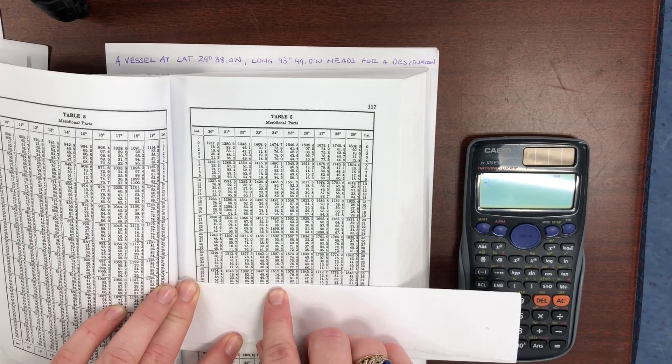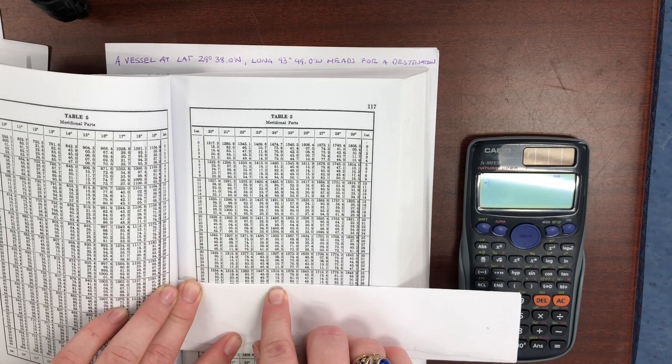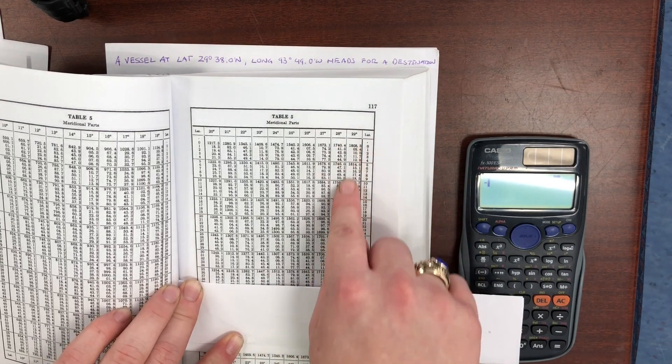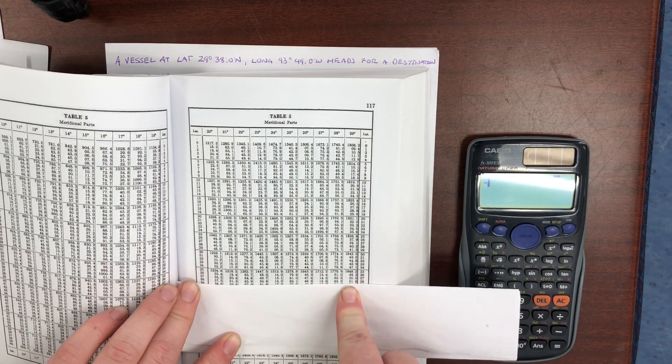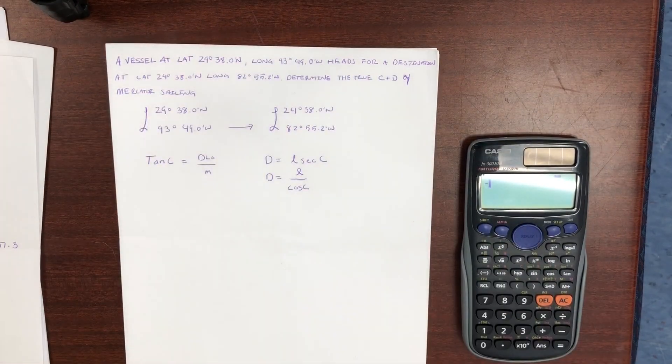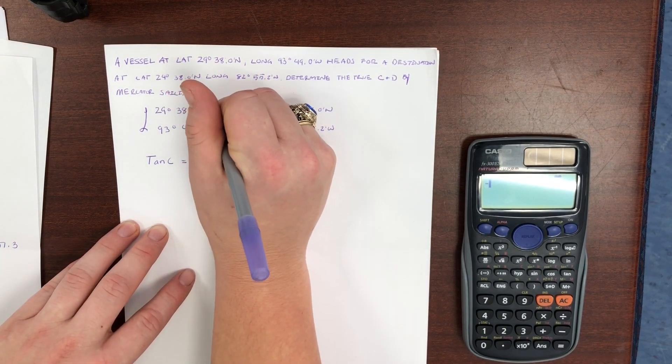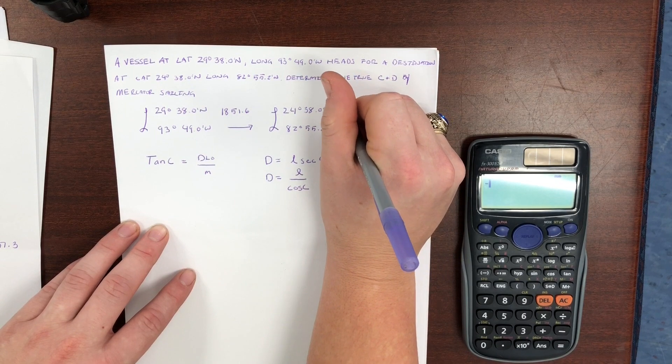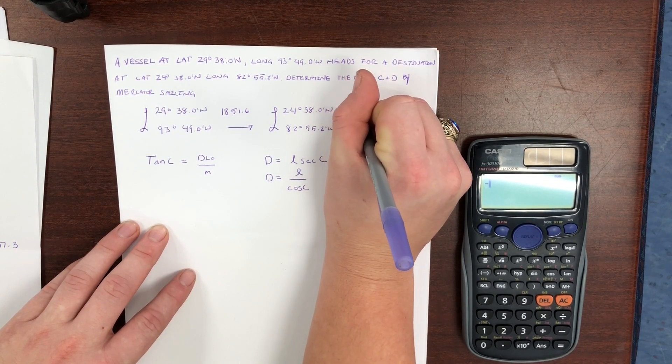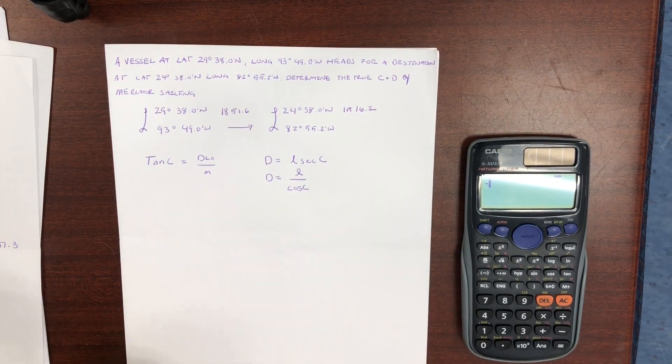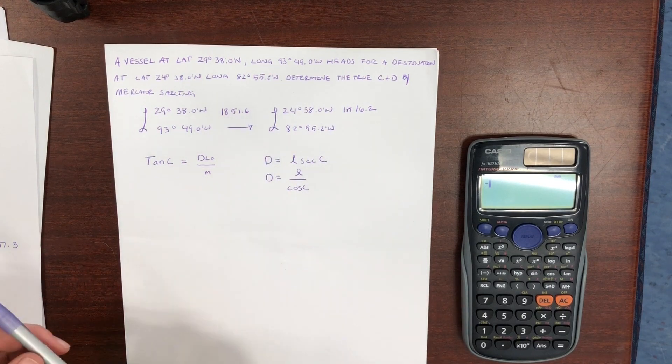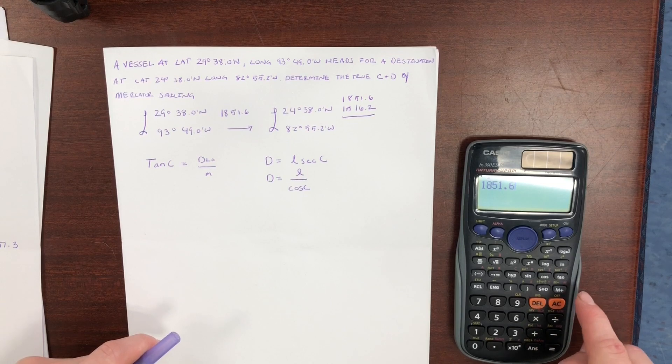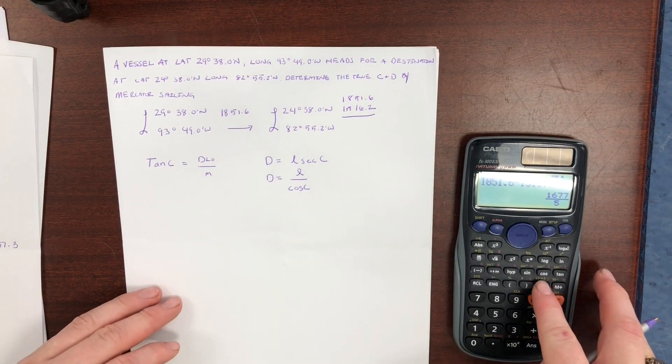So here we see, for 24 degrees 38 minutes, the meridional parts table gives us a value of 1516.2. And for 29 degrees 38 minutes, we get a value of 1851.6. So what we do is we go to our piece of paper and mark down our values. So in order to find little m, we take the difference between the two values found by table 5. So 1851.6 minus 1516.2 gives us the number of 335.4, and that is our little m.